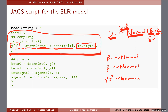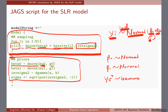That completes the sampling block. For the priors block, beta0 follows dnorm — we'll give it mean 0 and standard deviation 100 as discussed earlier. Similarly, beta1 follows a normal. Inverse sigma squared, which means 1/sigma² follows a gamma, so we use dgamma here.